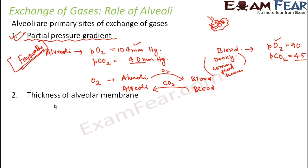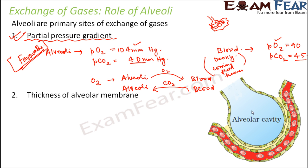Let us look at the alveolar membrane closely. This is the end of the alveoli and this denotes the blood vessel. This is the alveolar cavity, and this membrane is the alveolar membrane. The alveolar membrane is surrounded by one layer of epithelial cells, and immediately very close to it is another layer of epithelial cells, beyond which are the blood vessels — they are very close together. Let us see how the nature of the alveolar membrane favors the exchange of gases.